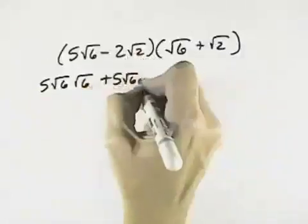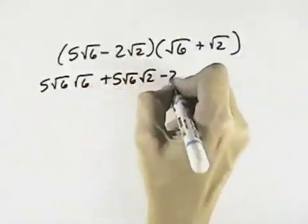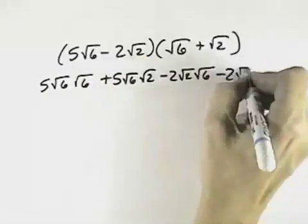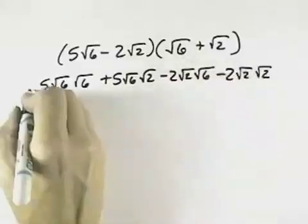Plus 5 square root of 6 times the square root of 2 for the outer terms, minus 2 root 2 times the square root of 6 for the inner terms, and minus 2 root 2 times the square root of 2 for the last terms.